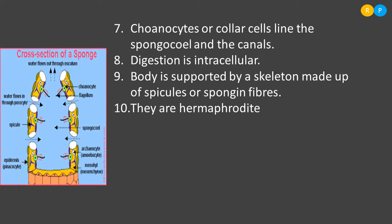Sponges are hermaphrodites — bisexual animals. This means the same animal produces both male and female gametes. There is no distinction between male and female animals in sponges; they are called hermaphrodites.